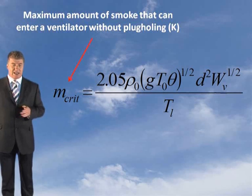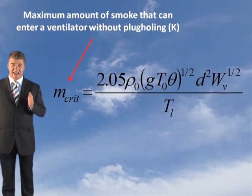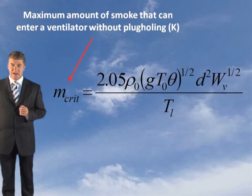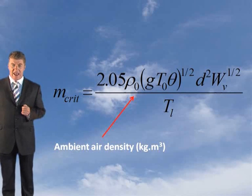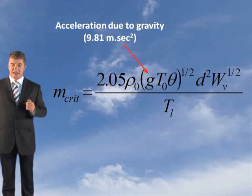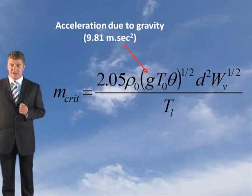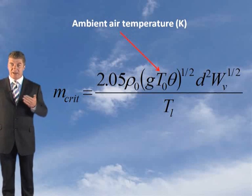Where MCRIT is the maximum amount of smoke that can enter a ventilator without plug-holing occurring, your ρ₀ is your ambient air density, you've got your gravity, 9.81 metres per second squared, you've got T₀ which is your ambient air temperature.